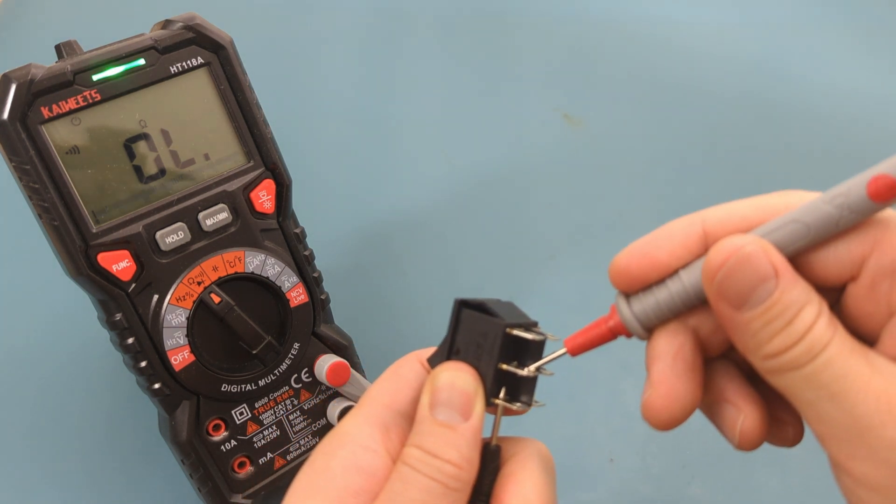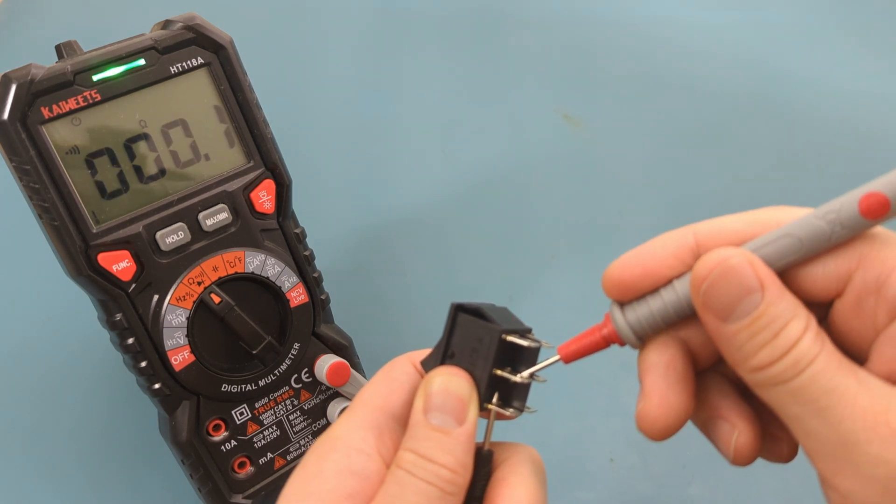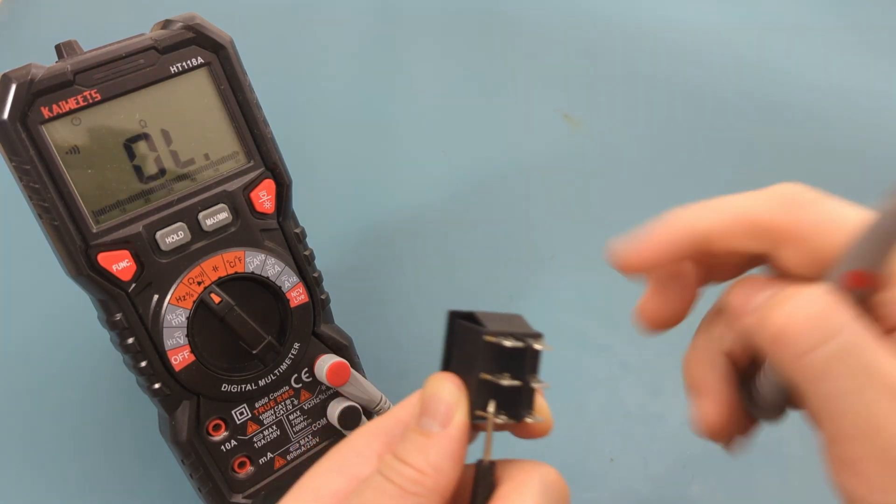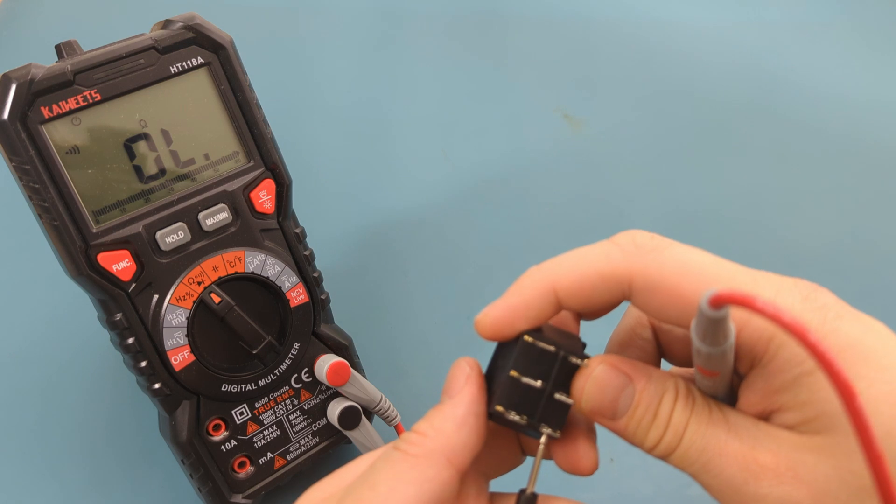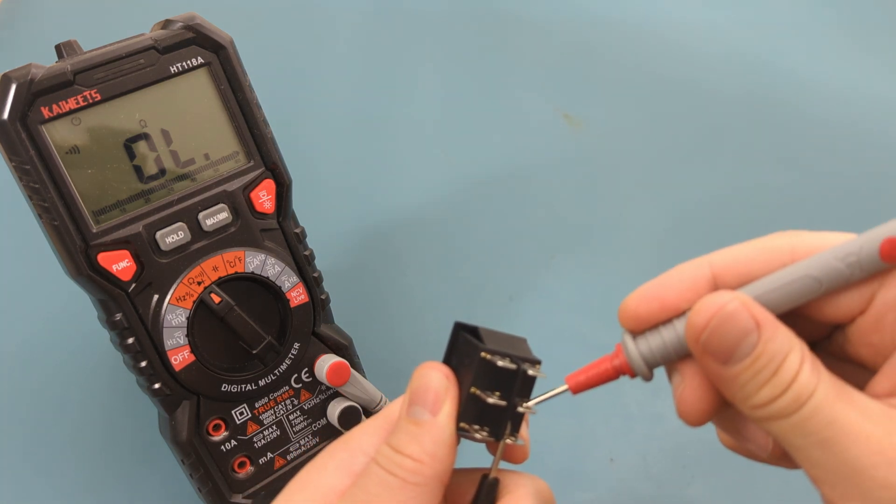Touch the bottom pin with the black probe. Touch the middle pin with the red probe. There is a beep, so there is continuity on this side. Do the same process on the other side. There is a beep, so this switch is good.